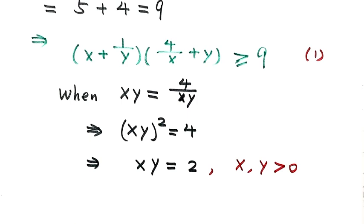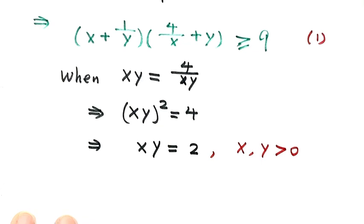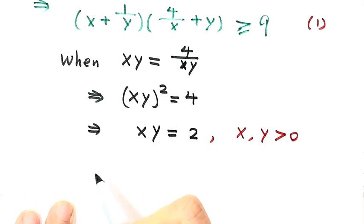So now we need to prove 9 is reachable. We just need to find one point. So now let's see. So we just pick one point.